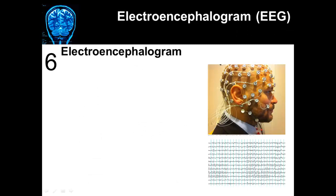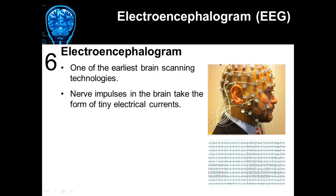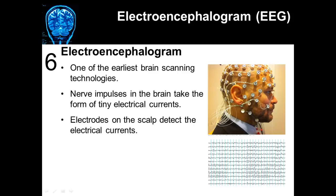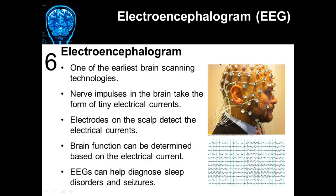Another way to look at the brain is the electroencephalogram, or EEG. This picture shows an individual undergoing an EEG, which measures the electrical activity within the brain. It's one of the earliest brain scanning technologies. The nerve impulses in the brain take the form of tiny currents, and electrodes on the scalp can detect those currents, so brain function can be determined based on those electrical signals. EEGs help diagnose sleep disorders as well as seizures.